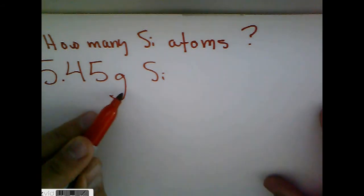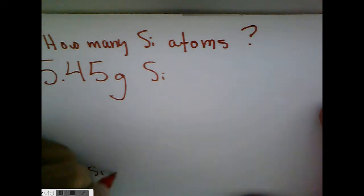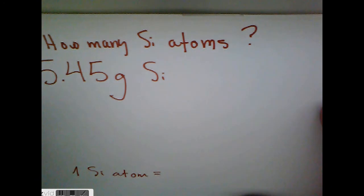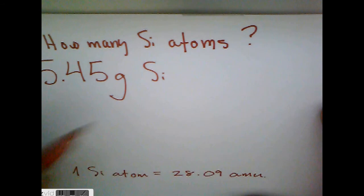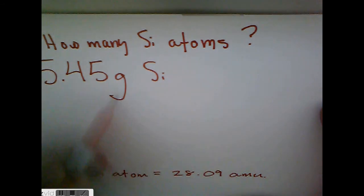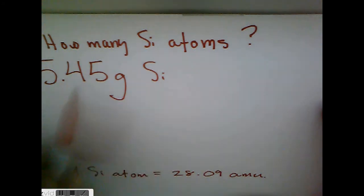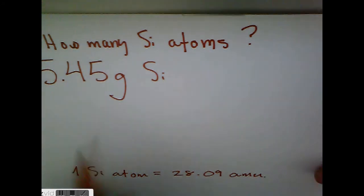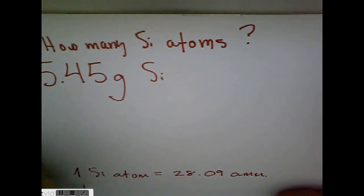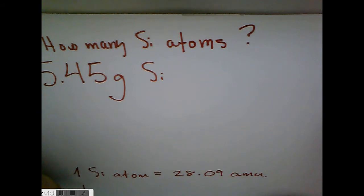The first thing we're going to need to do is make the weights relatable, because this is in grams, and the weight of one silicon atom — is what? This is a time for the periodic table. It's 28.09 AMU. So grams and AMU need to be converted. We're going to convert this amount of silicon to the same quantity expressed in AMU — atomic mass units. We're going to do that by understanding that one AMU equals what?